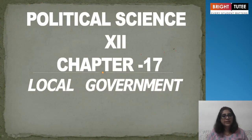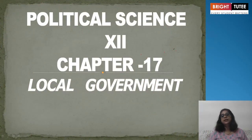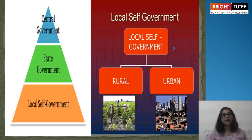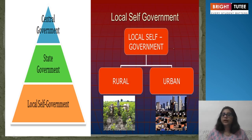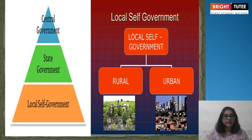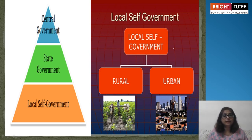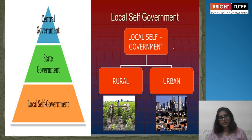Hello students, today once again I am here with chapter number 17, Local Government, Political Science Class 12. Let's see the pyramid and what we are going to study in this chapter — that is the central government, state level, and local self-government. Local self-government is divided into two parts: rural and urban government.